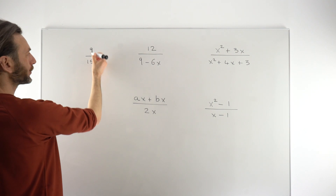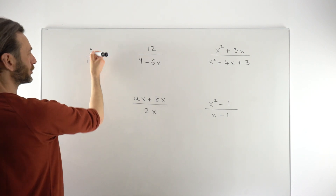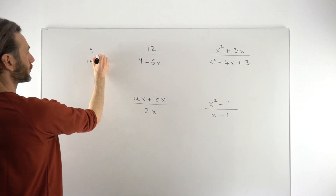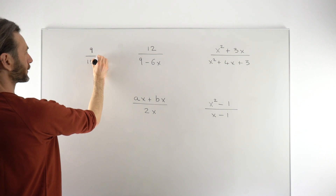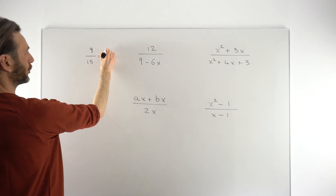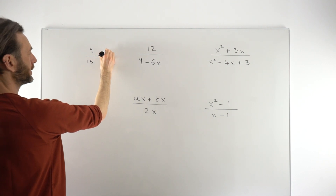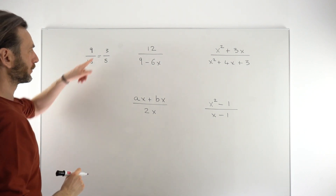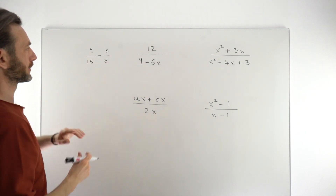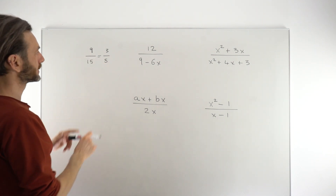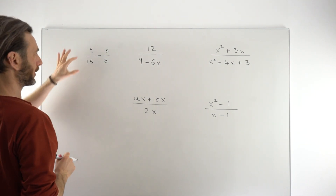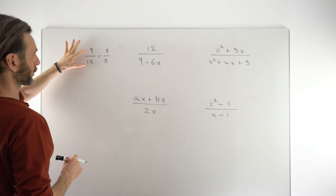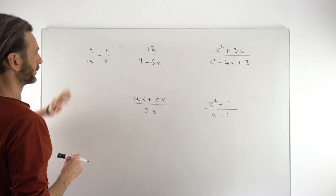Both of these numbers — the numerator and the denominator — are divisible by 3. So we would divide top and bottom by 3 and we get 3 over 5. So 3 over 5 is the equivalent numerical fraction to 9 over 15.